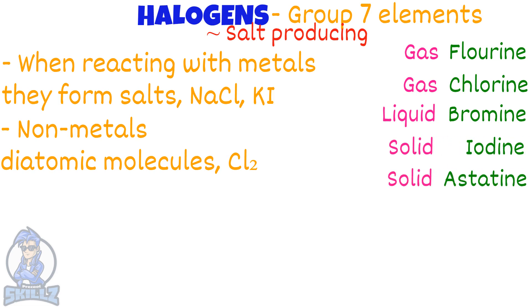Moving on, we will now see the colors of these halogens. This is important since the color of the halogen is often tested in your examination. Fluorine is yellow, chlorine is green.